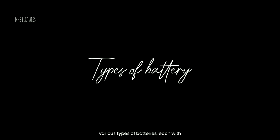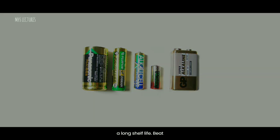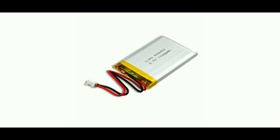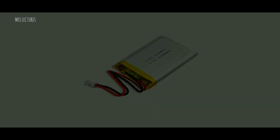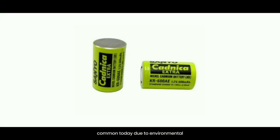There are various types of batteries. Alkaline batteries — disposable batteries commonly used in household devices, with an alkaline electrolyte and long shelf life. Lithium-ion batteries — rechargeable batteries widely used in portable electronics, electric vehicles, and renewable energy systems, offering high energy density, low self-discharge rates, and long cycle life. Lead-acid batteries — widely used in automotive applications and backup power; heavy but provide high surge currents at relatively low cost. Nickel-cadmium (NiCd) batteries — rechargeable batteries capable of high discharge currents, previously widely used in portable electronics and power tools.